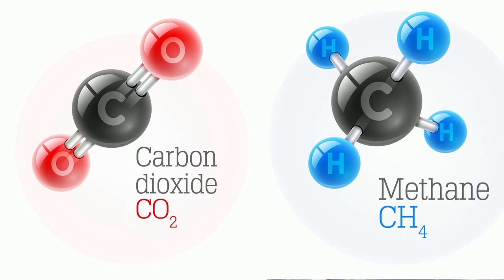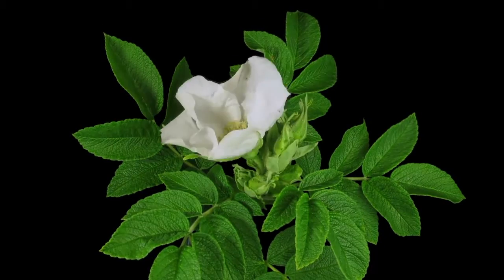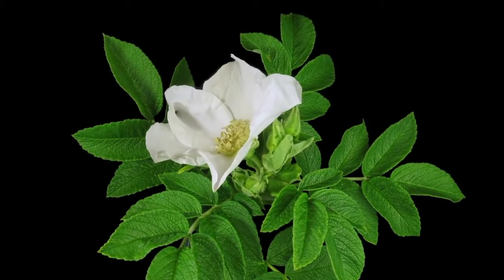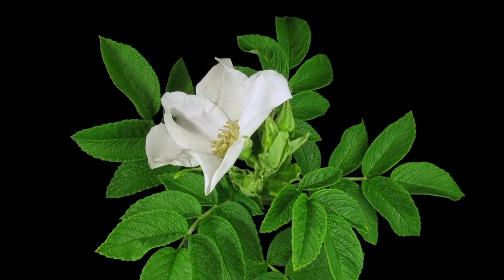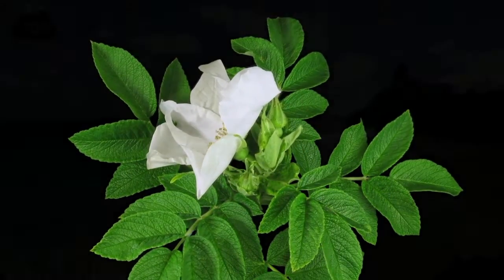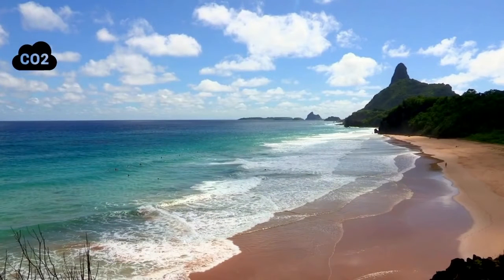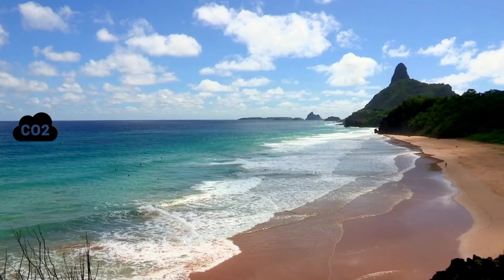This atmospheric carbon can be absorbed by autotrophs like plants and plankton to be used for photosynthesis. It can also be absorbed by bodies of water and the ocean. When carbon is absorbed by the ocean, it reacts with the water and creates carbonic acid.